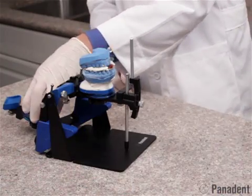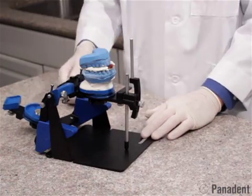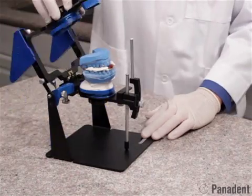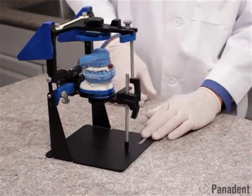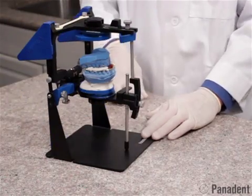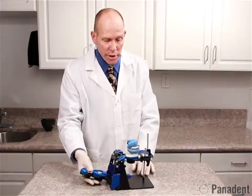We can then add a mounting plate to our lower frame here. We can add some plaster to the mounting plate and to the cast, swinging this around, making a connection of the lower cast to the lower frame of the articulator. So we'll go ahead and mix some plaster at this time.